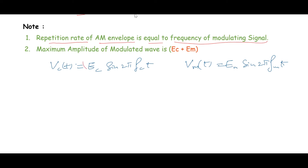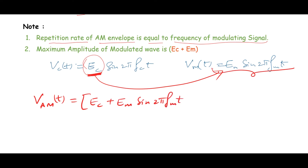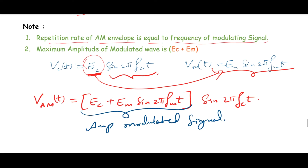Whenever we do AM modulation, this amplitude element is going to vary — and by the amount EM. So the amplitude modulated wave equation will become: (EC + EM sin(2π fm t)) · sin(2π fc t). This is the amplitude of the modulated wave. Let's mark this as Equation 1.